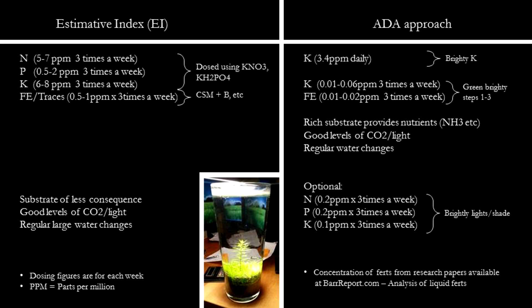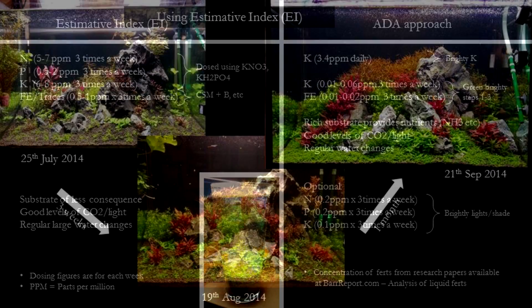For nitrogen, the substrate provides a non-limiting amount. In terms of potassium, ADA fertilizers have a lot. So the biggest differentiating factor is that ADA is very light in the phosphates department. The iron dosing levels of ADA are also significantly lower compared to EI by almost a factor of 10. Either one of these systems can grow great tanks, and there are examples all over the internet of people successfully using one system or the other.